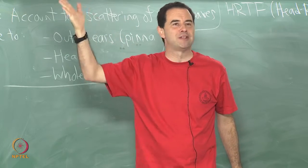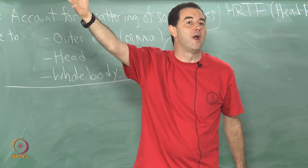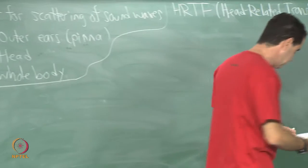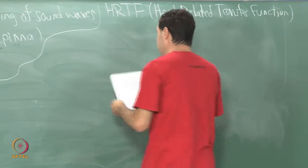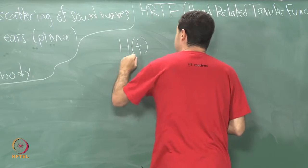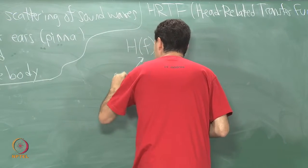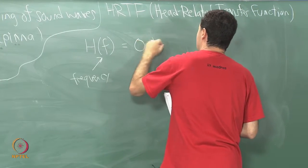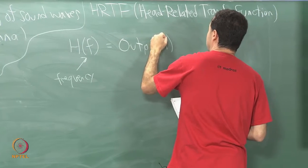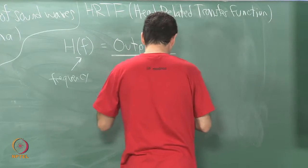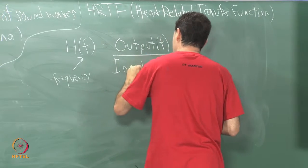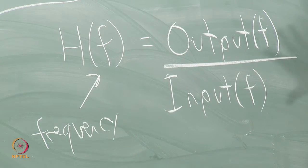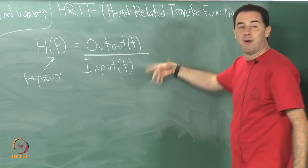It is this extra amount of scattering. There is a transformation that is happening based on where the sound is coming from and it is a transformation in the frequency domain. The way this function is represented, H of f, is a function of frequency and it looks like output as a function of frequency over input as a function of frequency.